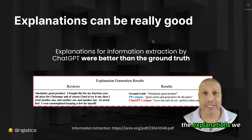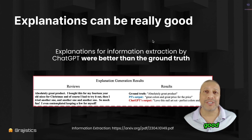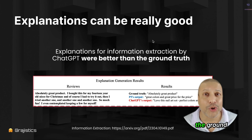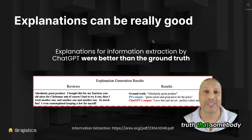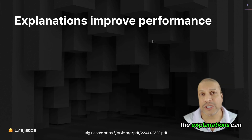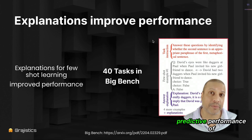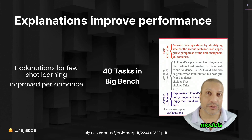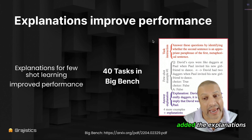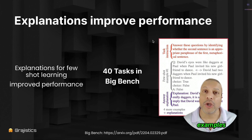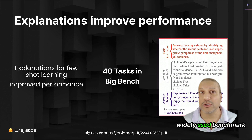The explanations we get out of these models can be really good — sometimes, as one study showed, even better than the ground truth someone was given. The explanations can also be used to improve the predictive performance of models. They added explanations along with some examples for doing tasks in Big Bench, which is a widely used benchmark, and were able to improve performance by adding these explanations.